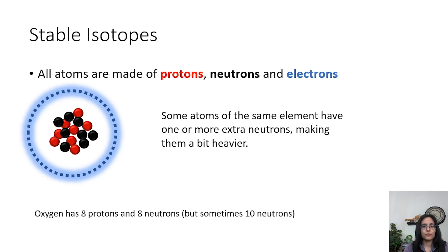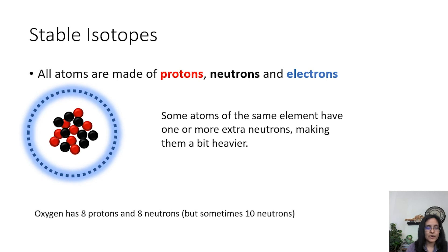Another proxy we can use is stable isotopes. All substances are made of atoms, which consist of protons, neutrons, and electrons. What makes an element what it is — say, oxygen — is its number of protons: all oxygen atoms have eight protons. Most oxygen atoms also have eight neutrons, but some have ten neutrons, making those atoms a little heavier — like carrying a bowling ball versus a beach ball in your backpack on a hike.